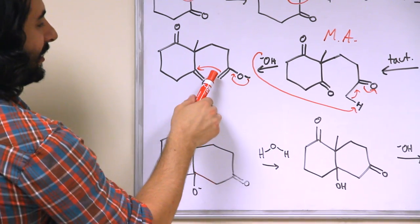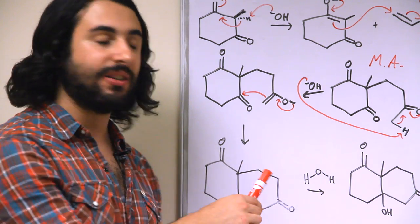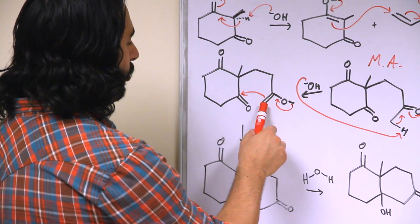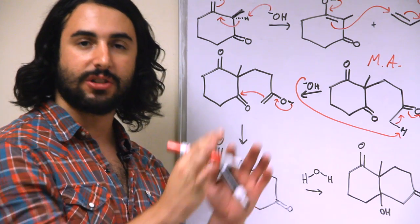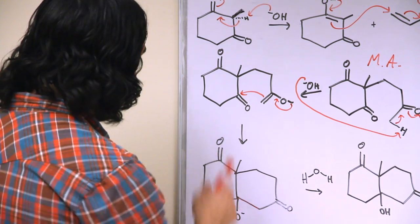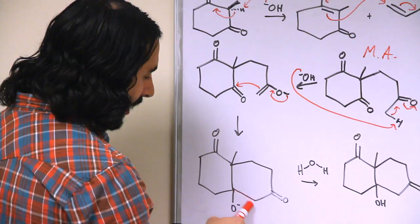So this is an intramolecular aldol condensation. We're doing a 1-2 addition. So this is directly attacking a carbonyl carbon. There's no alpha-beta unsaturation here so it's just aldol, it's not the Michael. But this is what we're going to end up getting.